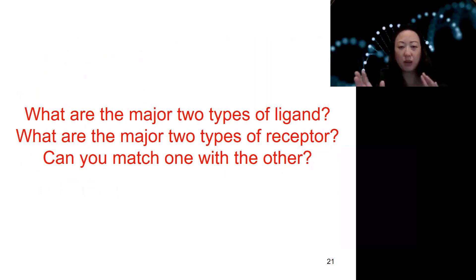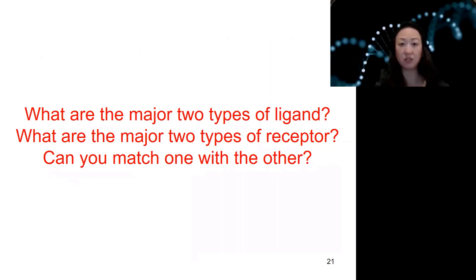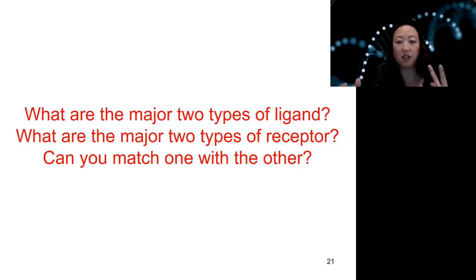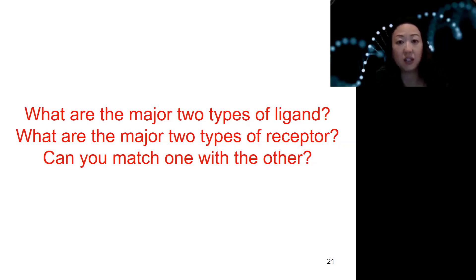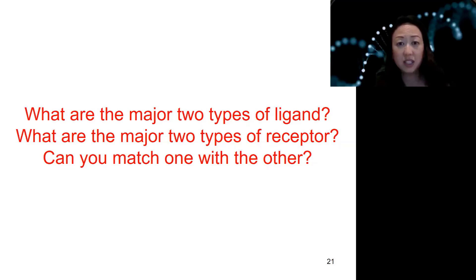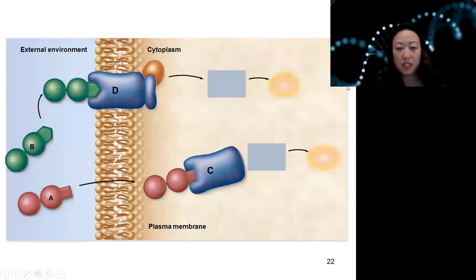Now, thinking through another way of looking at it other than the four types, we can also think about signaling in terms of the kind of ligand and the kind of receptors. There are two major types of ligand and thus two major types of receptors, and you'll need to know how to match each one up. One of the main chemical traits is how they interact with water — proteins can be hydrophilic or hydrophobic, like water-loving or water-fearing.